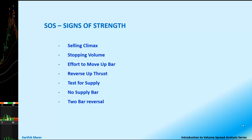let's quickly recap on what are the Signs of Strength, or SOS. They are the Selling Climax, the Stopping Volume, the Effort to Move Up Bar, the Reverse Up Thrust Bar, Test for Supply, No Supply Bar, and the 2 Bar Reversal.